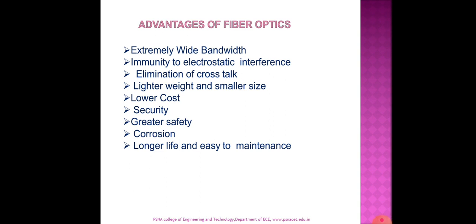The next advantage is lower cost. The material used in fiber is silica or silicon dioxide, which is one of the most abundant materials on earth, resulting in lower cost. Optical fiber costs are continuing to decline. Regarding security, fiber cables are more secure than metallic cables. Due to immunity to electromagnetic coupling and radiation, optical fiber can be used in the most secure environments.